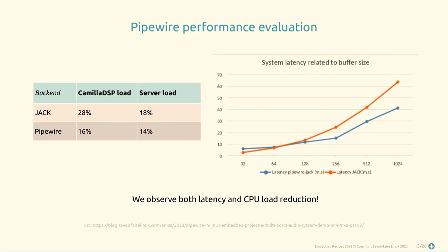The first measurement compared PipeWire with JACK in terms of both latency and CPU load. We measured end-to-end latency from the analog input into the audio codec to the analog output — not just server latency — because overhead accessing the audio device matters. The main result: we measured a performance reduction in both the core JACK server process versus PipeWire, and also in the Camilla DSP load, which is very interesting — gaining a few percent CPU is already significant for customers with constrained systems.